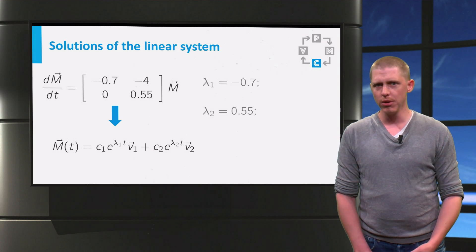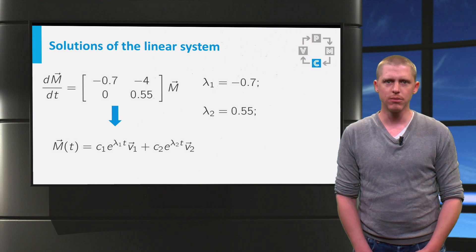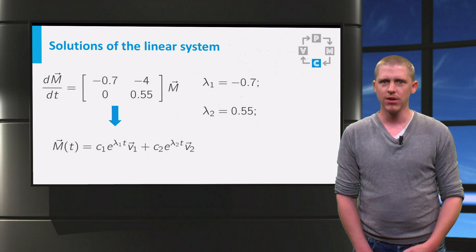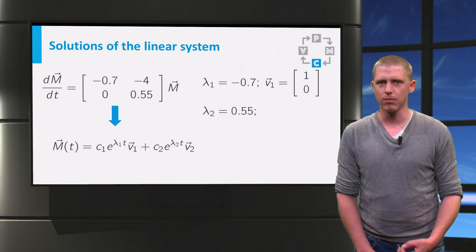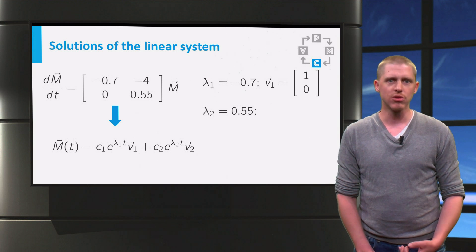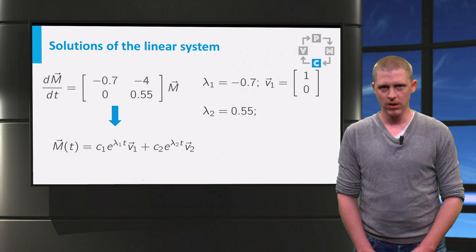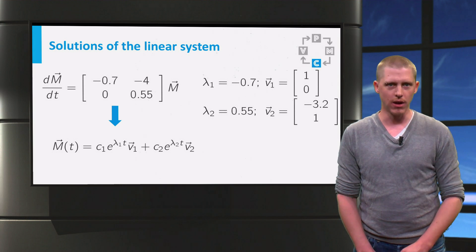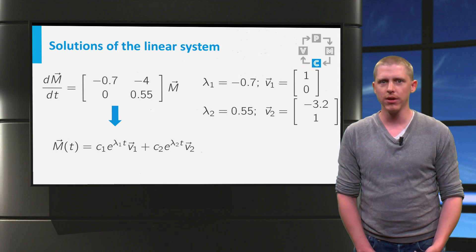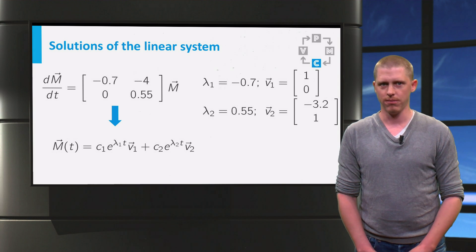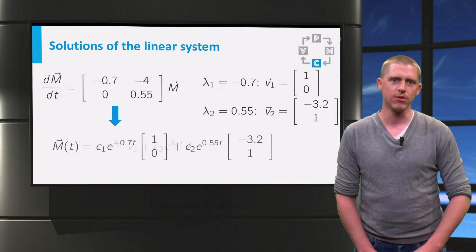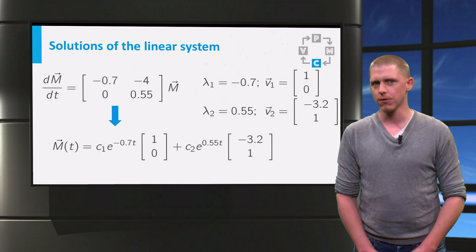The Jacobian matrix has the two eigenvalues minus 0.7 and 0.55. One eigenvector for minus 0.7 equals 1, 0, while for 0.55 an eigenvector is minus 3.2, 1. Putting everything together leads to this solution for m.